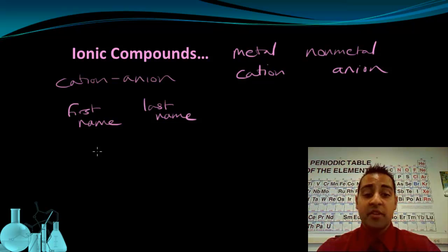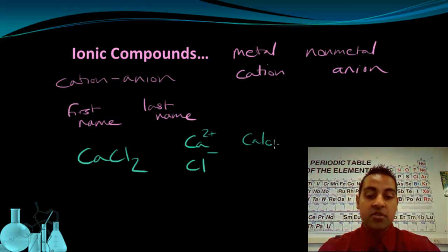Let's look at a simple example. The metal is calcium and the nonmetal is chlorine. If we name these individual ions, we know that the metal ion should be just named calcium, and we know that chlorine, when it's an ion, becomes chloride. So just like we said, first name, last name, the metal is the first name, the nonmetal is the last name. So this becomes calcium chloride.